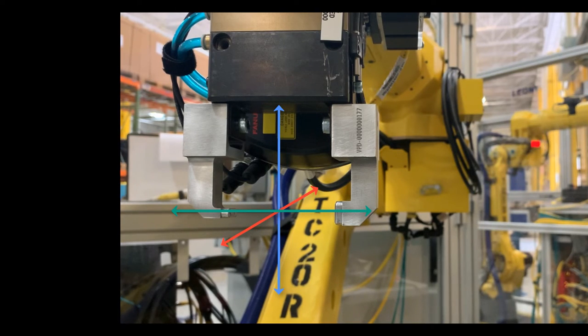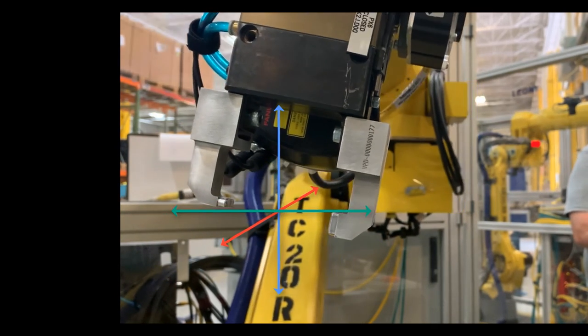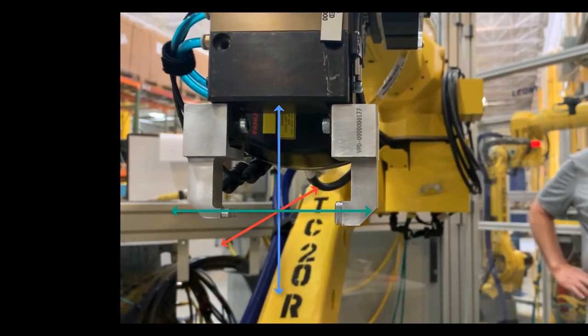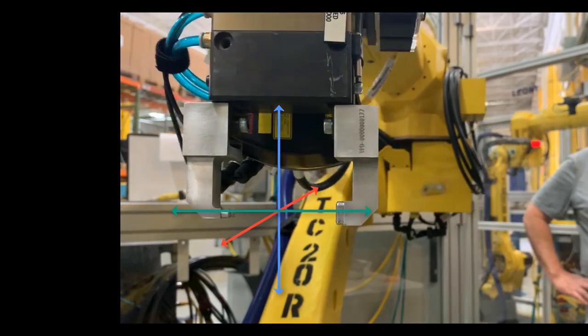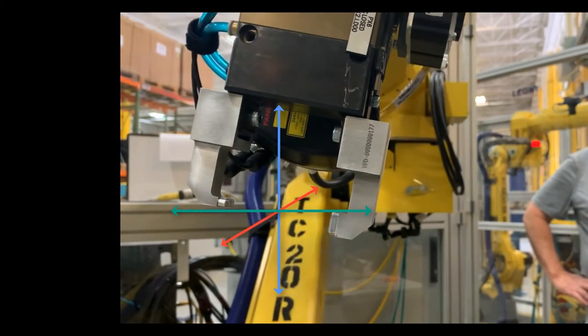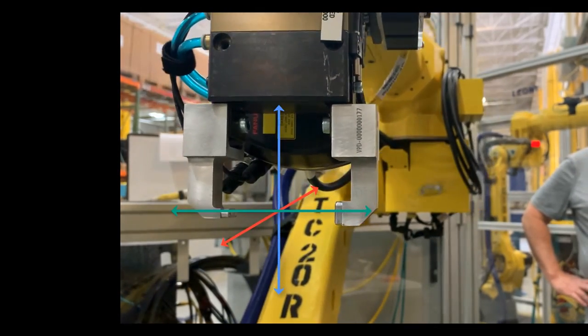There is a second use for coordinate systems, beyond describing a point in space. Coordinate systems are also used to describe orientation. Orientation can describe the angling or rotation of a tool, side-to-side, front-to-back, clockwise, or counter-clockwise. Those directions are also commonly described as yaw, pitch, and roll.